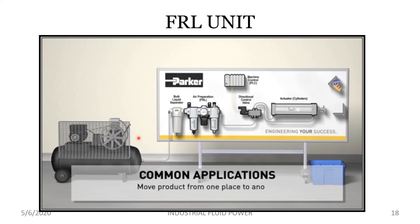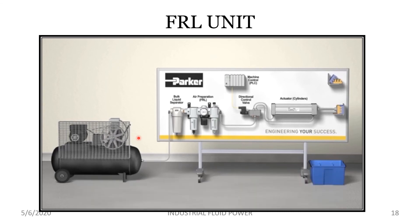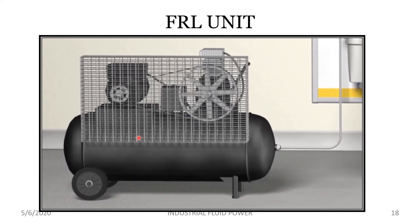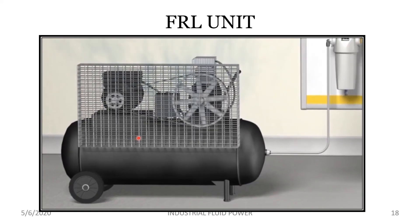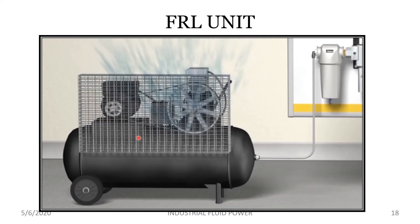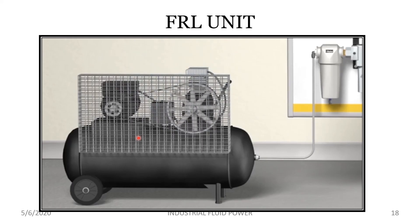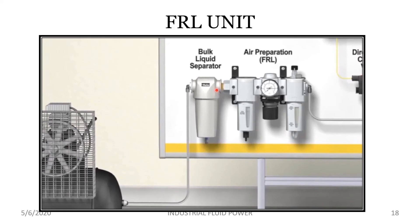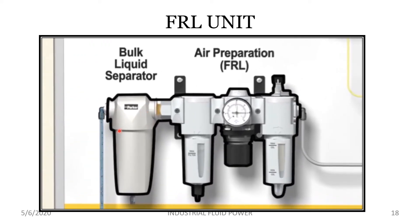Some common applications include moving product from one place to another or pressing and clamping pieces of a product together. To best understand how the system works, we start at the beginning with the compressor. The compressor generates the energy that powers the system in the form of compressed air by drawing in atmosphere and squeezing it into a smaller space. Once compressed, the air needs to be dried and cleaned so that harmful particulates such as rust or dirt do not clog the moving parts. The compressed air then travels through a line to the next component called an air preparation unit or FRL.